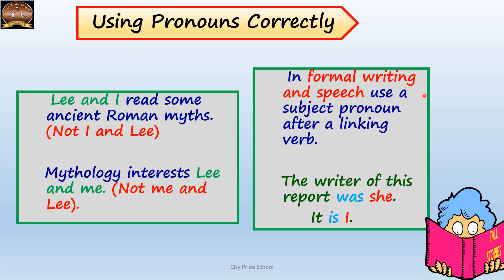Another rule: in formal writing and speech, always use a subject pronoun after a linking verb. Linking verbs are all auxiliary or helping verbs like am, is, are, was, were, etc. For example, 'The writer of this report was she' — the subject pronoun comes after the linking verb. 'It is I' — after the linking verb 'is,' the subject pronoun 'I' is placed.